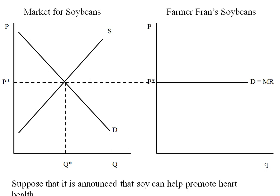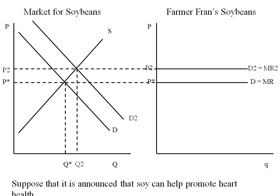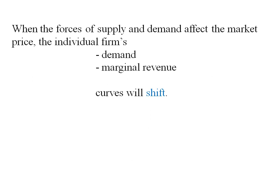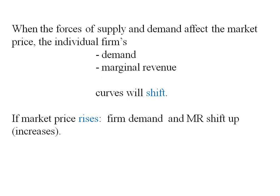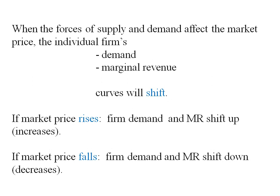Suppose it's announced that soy can help promote heart health. We'd expect this to increase demand for soybeans, giving us a new equilibrium price and quantity. With this new higher price, taken over to the firm, it gives them a new demand and marginal revenue curve. Whenever supply and demand forces affect the market price, the individual firm's demand and marginal revenue curves shift — average revenue shifts too. If market price goes up, firm demand and marginal revenue shift up; if market price falls, they shift down.